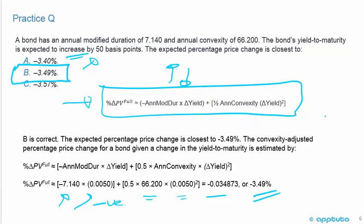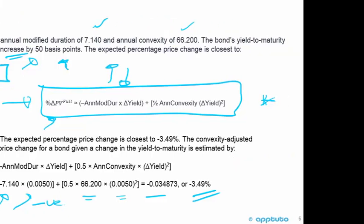In summary, for this LOS, when calculating the expected percentage price change given the annual modified duration, convexity, and expected change in yield to maturity, the formula is: expected percentage change in price ≈ negative annual modified duration times the change in yield, plus one-half the annual convexity times the change in yield squared. That's the last for this LOS. Thank you.